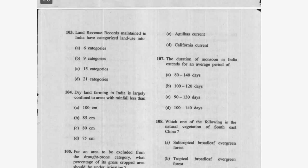Question 102: Which of the following is not a current of the Pacific Ocean? Options include Oyashio, Alaska, Agulhas, and California. Option C — the Agulhas current — is the correct answer as it is not a Pacific Ocean current.